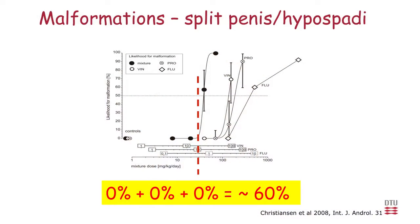When we dosed with the mixture, the three single substances caused malformations at higher doses individually, but within the mixture — when each substance was present at a dose causing no malformations whatsoever — we actually had 60% malformations in the mixture group.